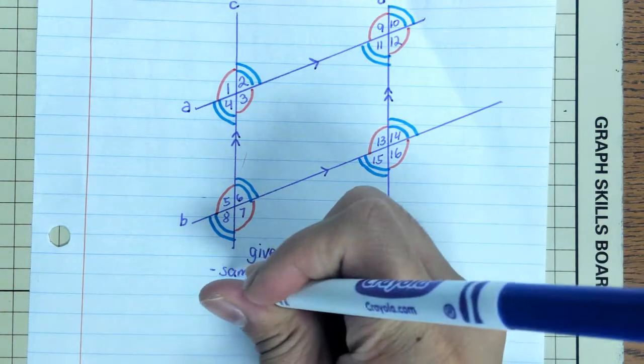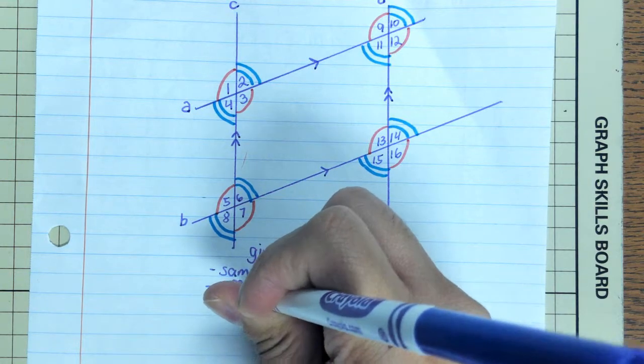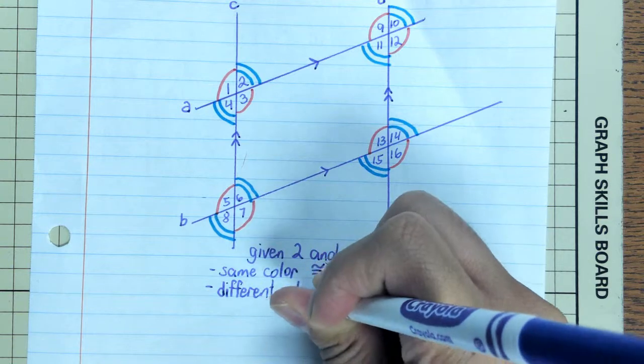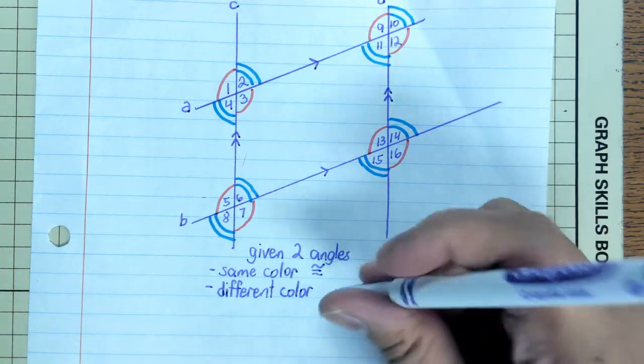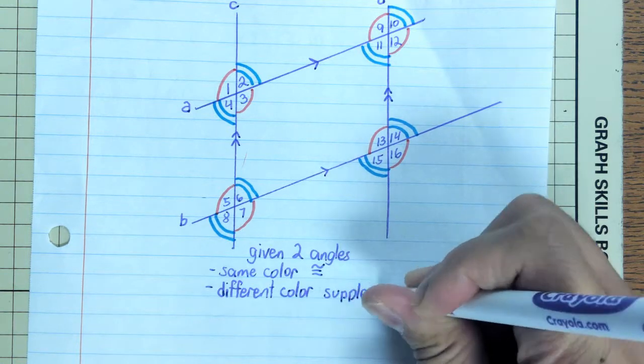If the two angles we have are different color, that means they are supplementary, or that they add up to 180 degrees.